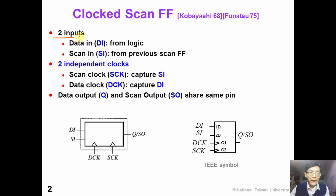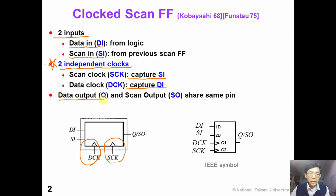A clock scan flip-flop has two inputs: one is data input DI, and the other one is scan input SI. This is the same as the MUX-D scan flip-flop. The interesting thing about clock scan is that it has two independent clocks — scan clock SCK and data clock DCK. DCK captures the data input from logic, and SCK captures the scan input from the previous flip-flop. The clock scan flip-flop has one data output Q, which can be shared by the scan output SO.